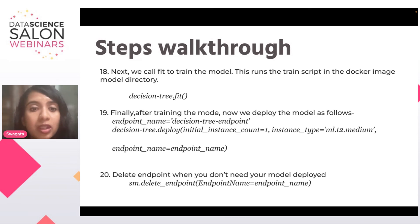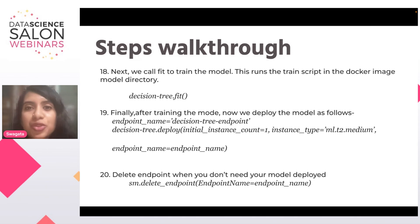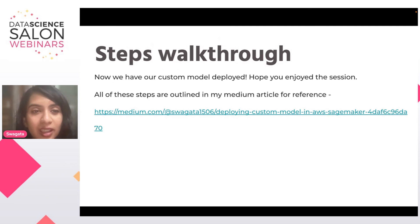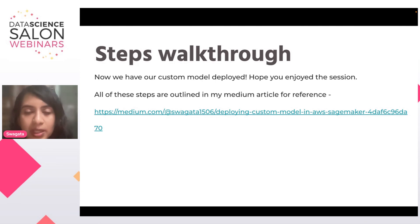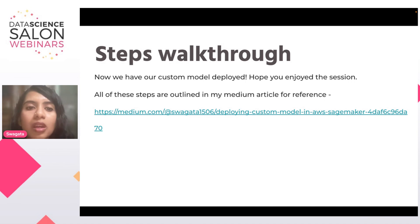After we're done using our model, we can delete the endpoint because it costs money, so make sure you don't keep it running. Now we have our custom model deployed. This was a very useful walkthrough on how you can use any custom model, build a Docker image, put it in ECR, expose it to SageMaker, and use the estimator class to deploy it. All of these steps are outlined in the article I've shared, which you can refer to and perform on your own time.